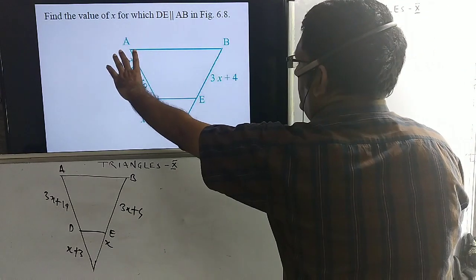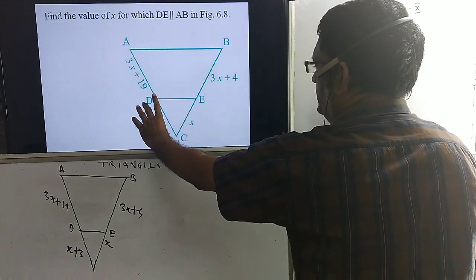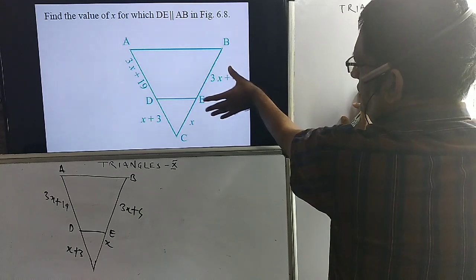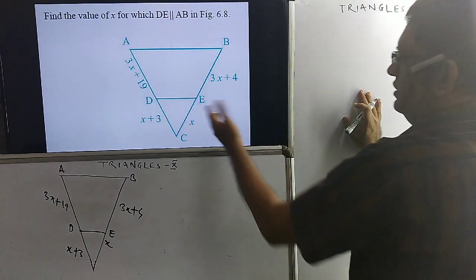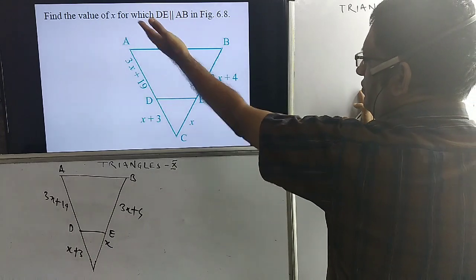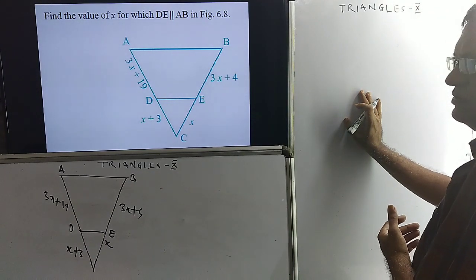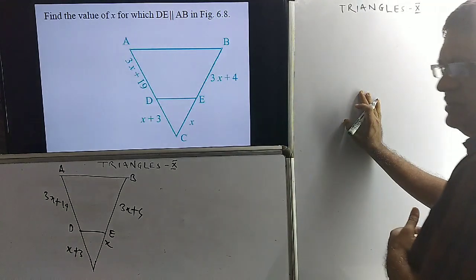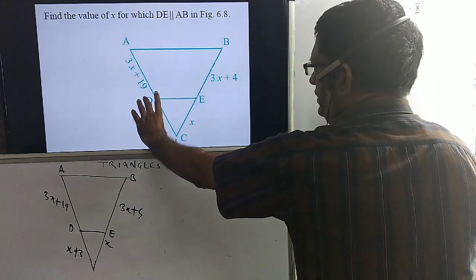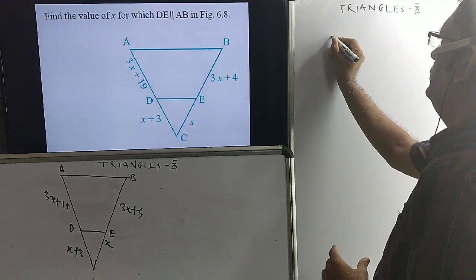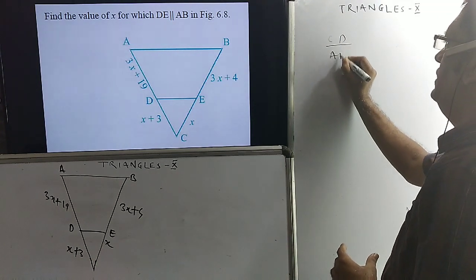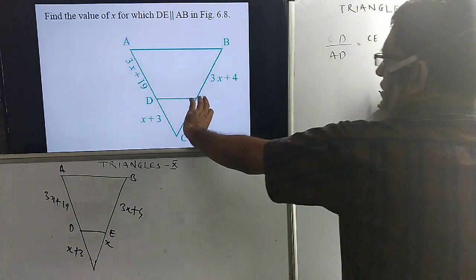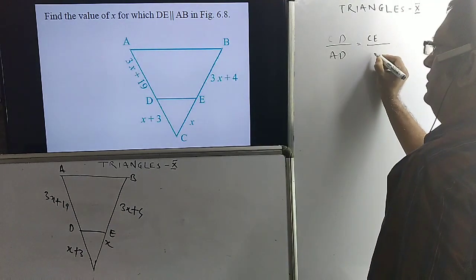In this problem, ED is given as 3x+19, this ED is given as x+3, CE is given as x, and EB is given as 3x+4. Another condition given is that DE is parallel to AB, and we want to find x. By the basic proportionality theorem, a line drawn parallel to one side of a triangle divides the other two sides in the same ratio — so CD divided by AD equals CE divided by EB.